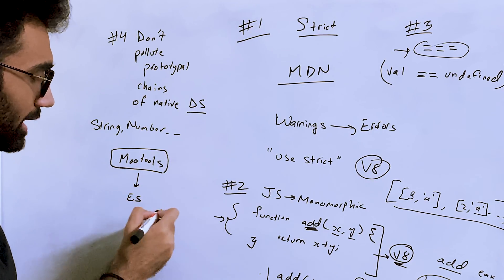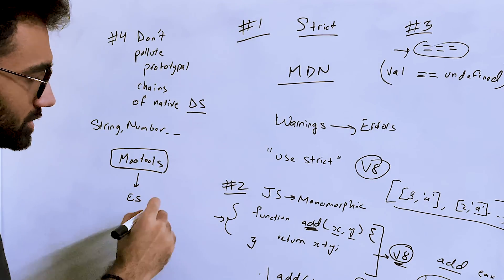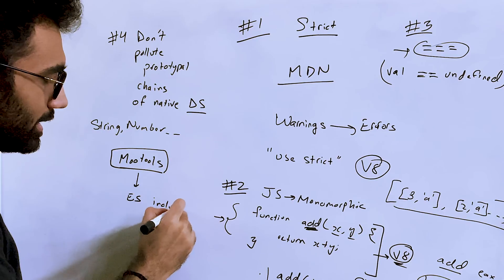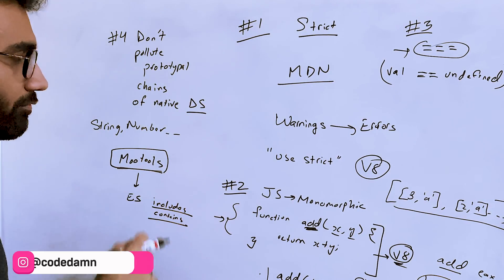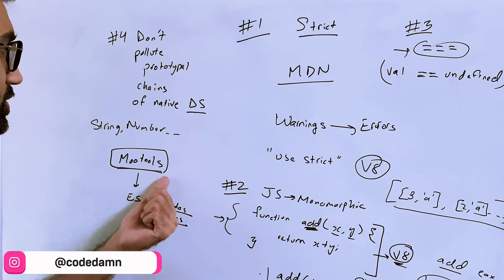Now the way these things were implemented, because MooTools was very popular back in the days, when new standards of JavaScript came in, for example ECMAScript, which released features like includes on string and contains and so on, they were not able to release it properly.